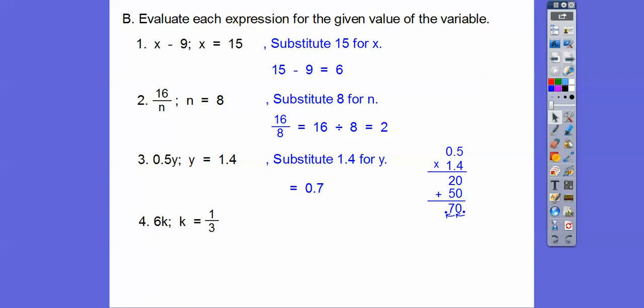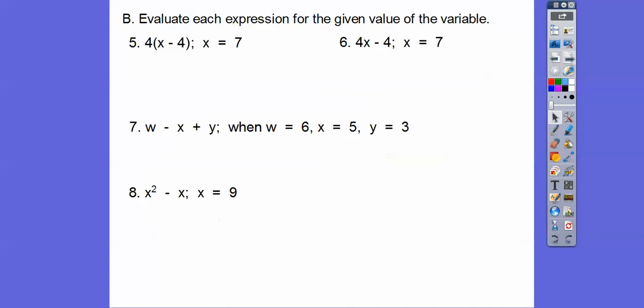Let's do the next one. 6K. Let's plug in K equals 1/3. So 6K is 6 times 1/3. 6 times 1/3 is the same as 1/3 of 6, so we get 2. 6 times 1/3 is the same as 6 divided by 3, which is still 2.